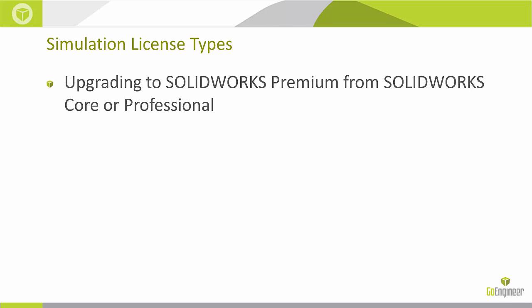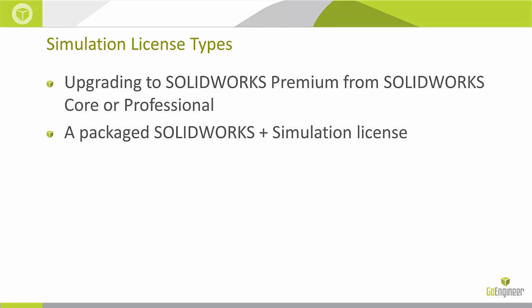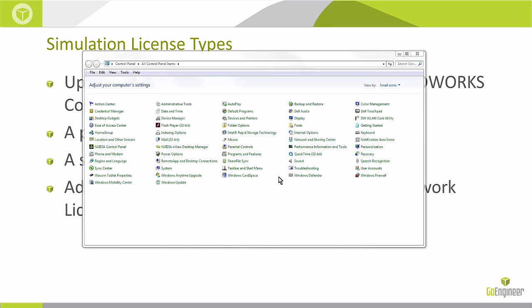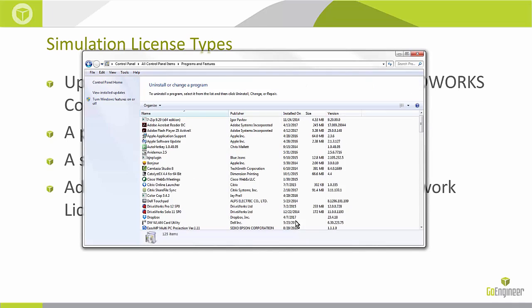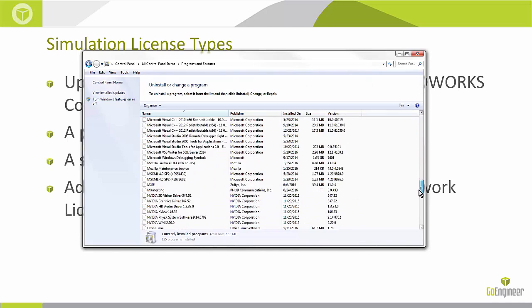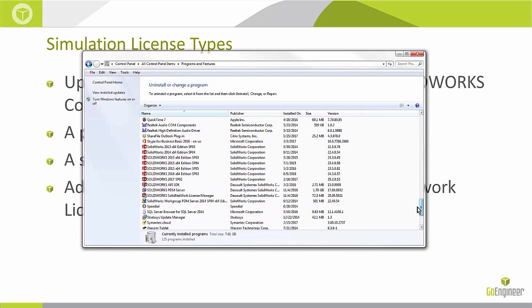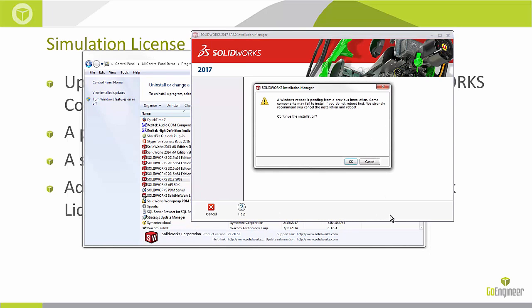Starting with the first case, upgrading to SOLIDWORKS Premium. This has two major steps, and they actually apply also to upgrading from a SOLIDWORKS license to an add-in with simulation. Go to your Control Panel, Programs and Features, scroll down to SOLIDWORKS, right-click Change, and then go over to Modify in your Installation Manager.